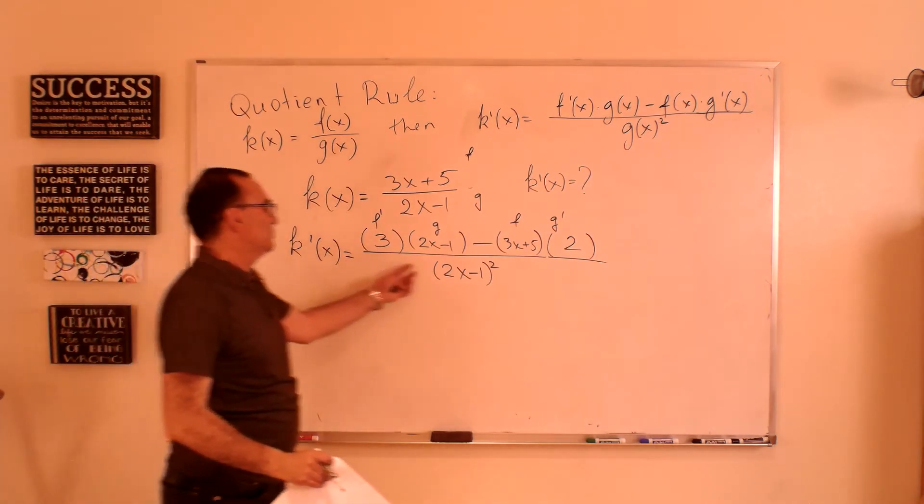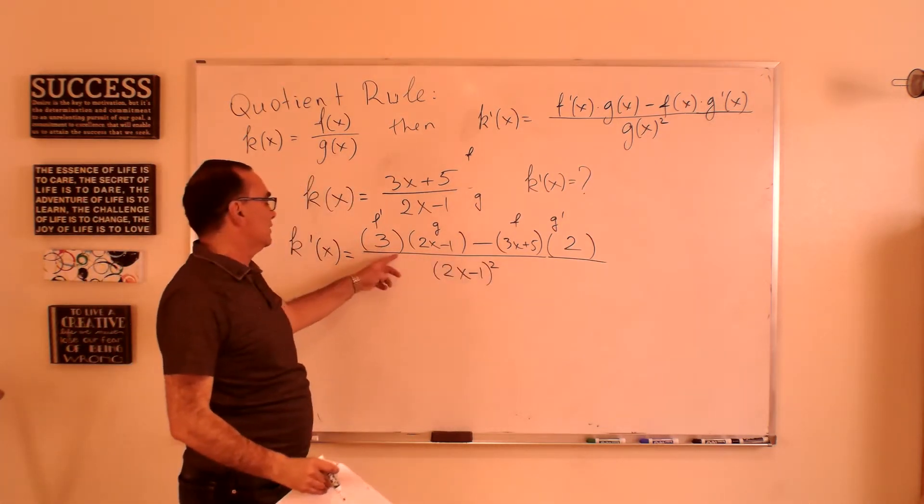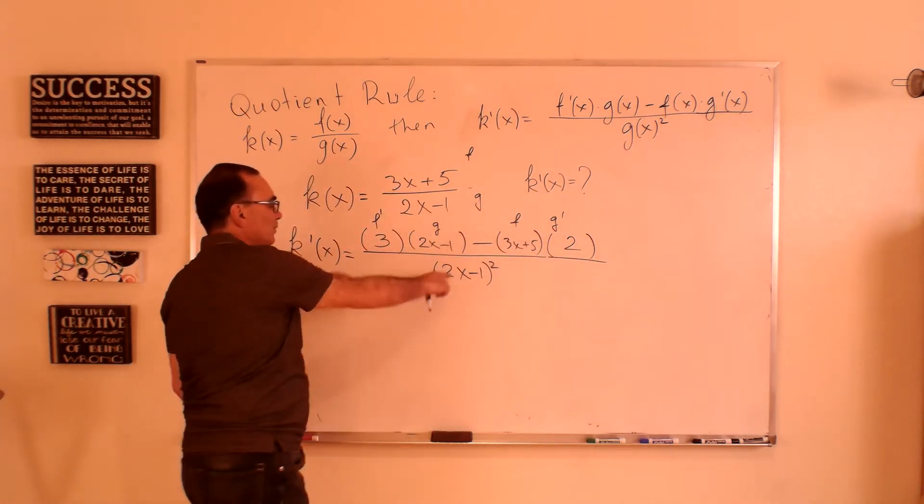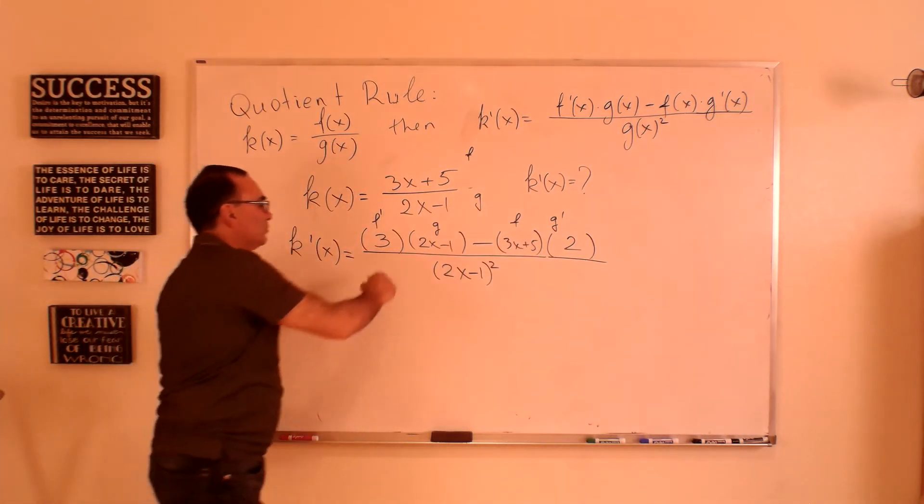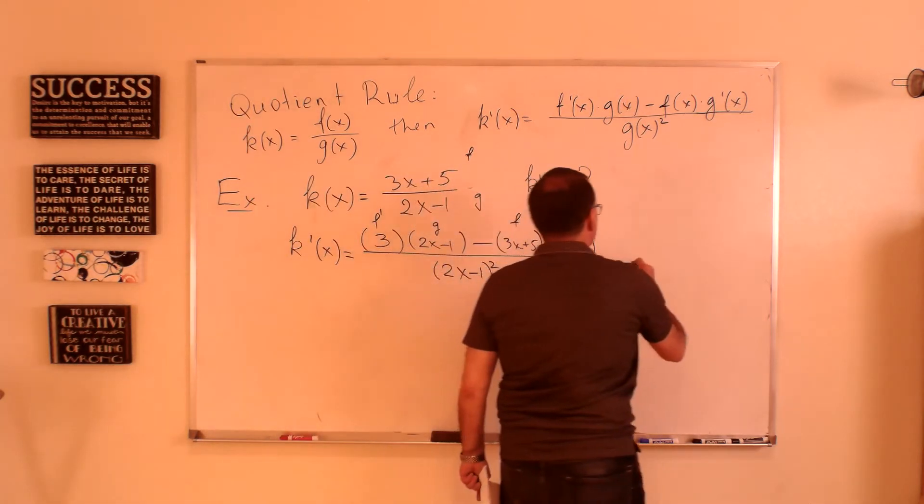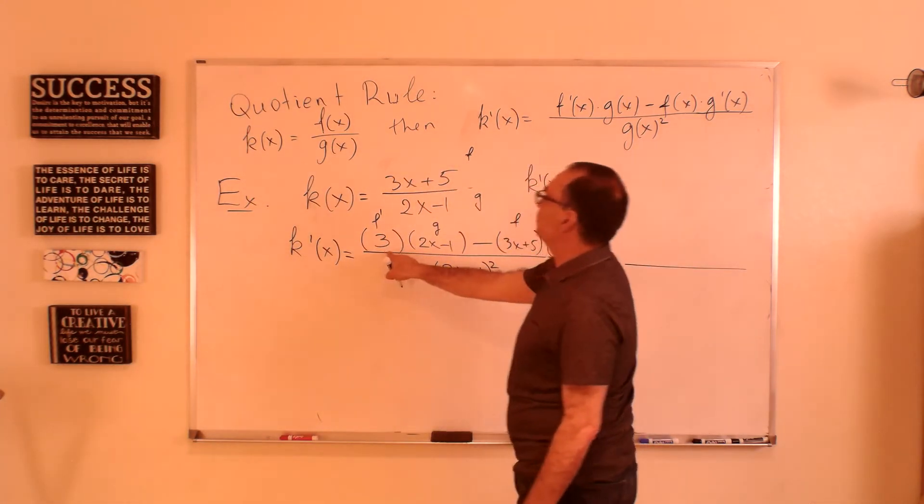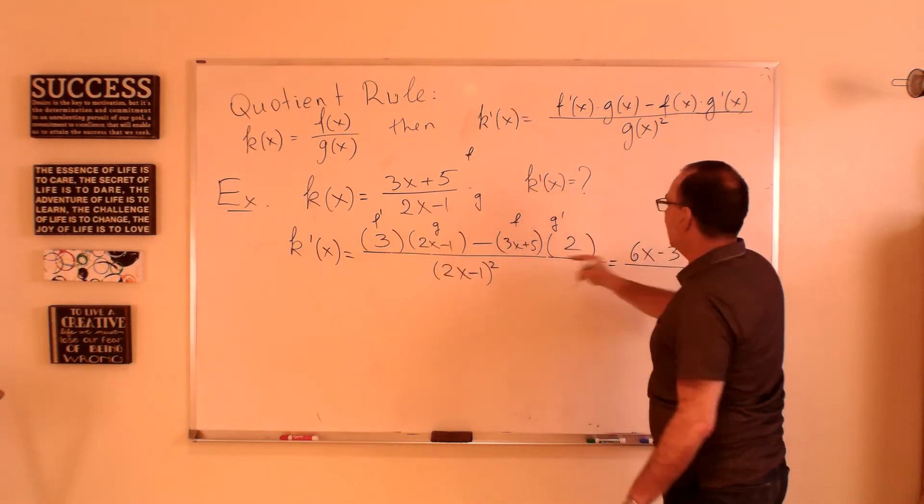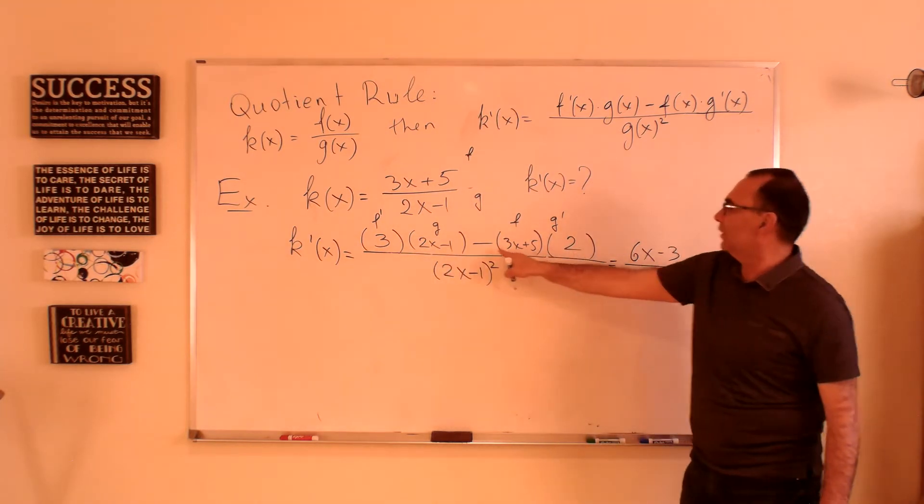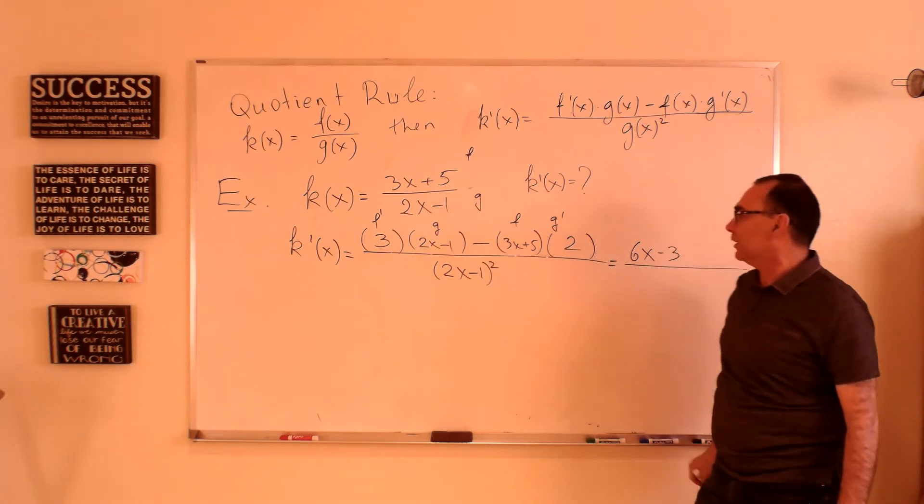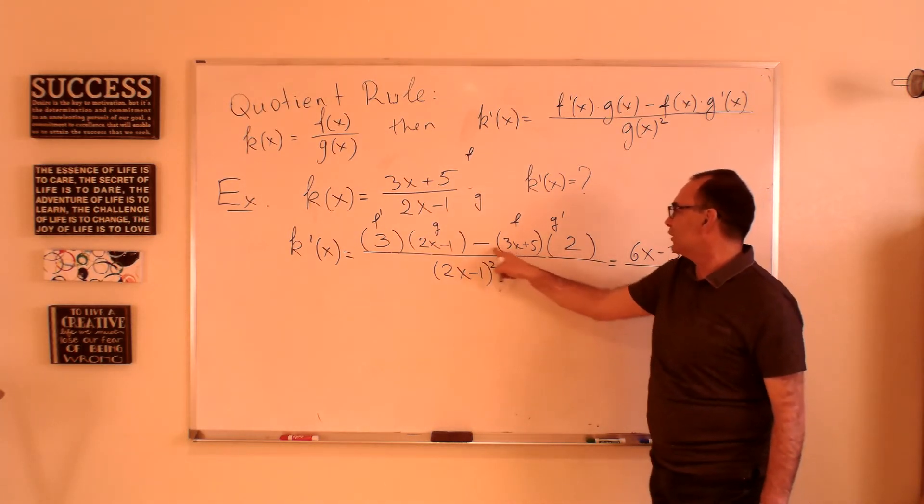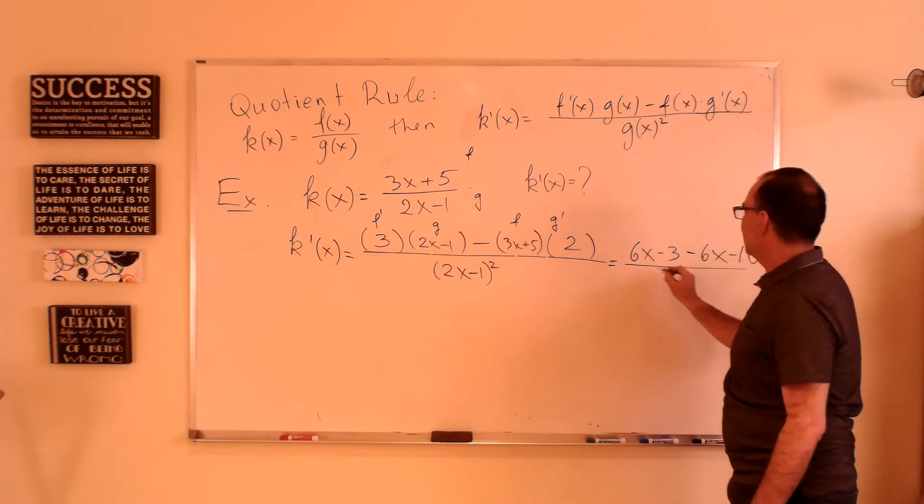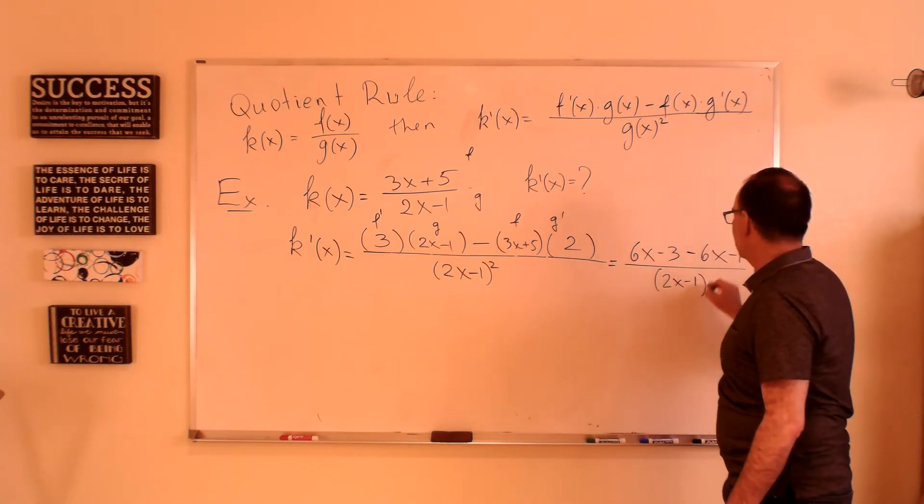There is not much to simplify. In fact, you may be required in the exam to simplify the numerator. You will never be required to simplify the denominator. But for the numerator, you have to distribute the 3 to be 6x minus 3, and then distribute the 2. Remember, you can also distribute the minus, so it will be minus 6x minus 10.